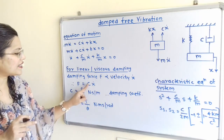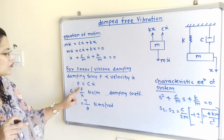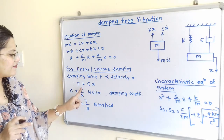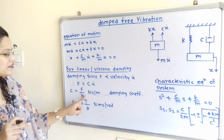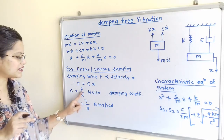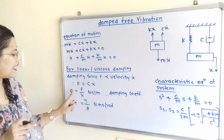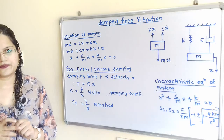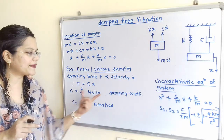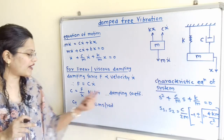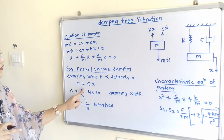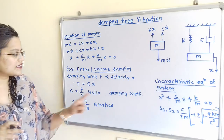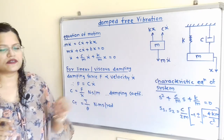The damping coefficient C equals F divided by X dot. The unit of F is Newton and the unit of X dot is meter per second, so the unit of C is Newton·second per meter. Therefore, the damping coefficient C equals damping force divided by velocity.